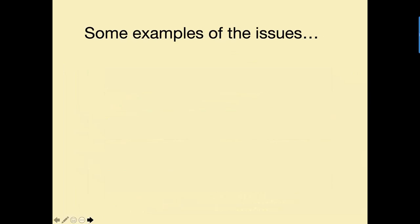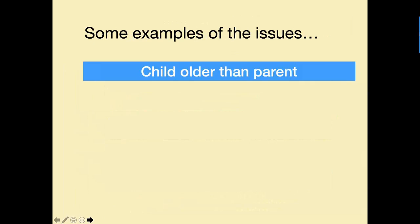Here are some examples of the issues among those 37 different inconsistency checks: a child older than the parent. This can happen when someone adds a similar or same name person who doesn't really pertain to that family. Sometimes it's as simple as looking at it and saying, oh, that isn't even one of the children in this family — the child needs to be detached from its parents. But in other cases, if the child is older than the parent and the record seems correct, you would need to do considerable research.